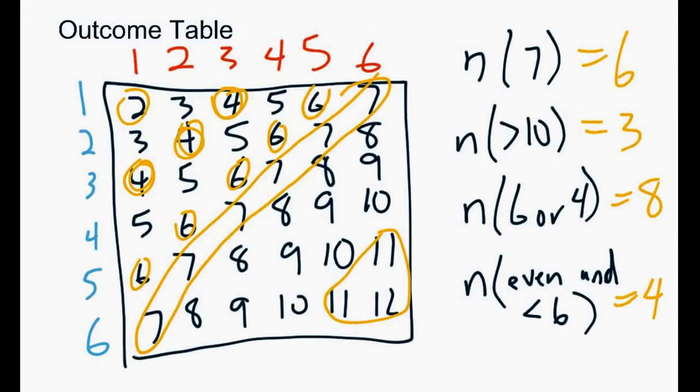Some situations it'll work good, other situations not so much. So in terms of like dice, it's a pretty good scenario. Another way we could do these would be to look at a tree diagram. A tree diagram works sort of the same as an outcome table, but it's better when you have multiple choices.